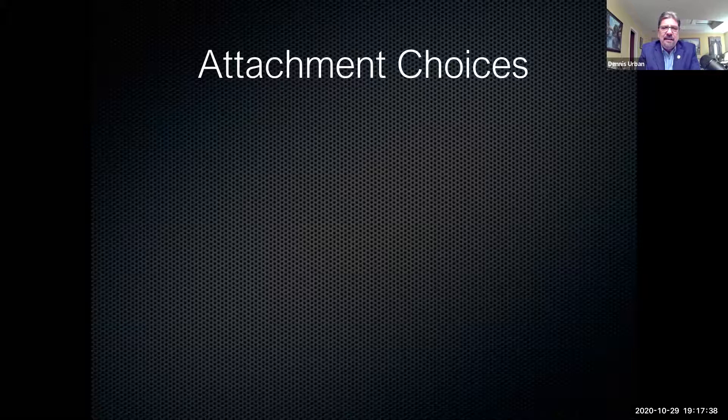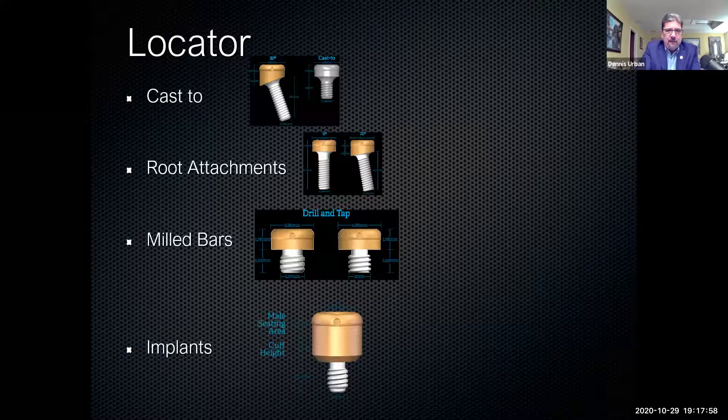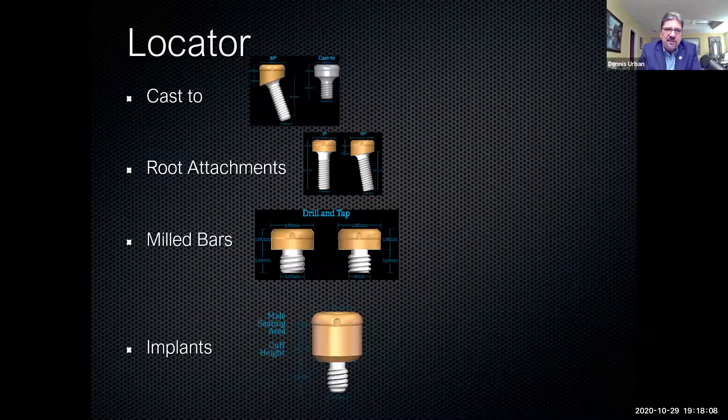Let's talk about attachment choices on implant overdentures. The number one choice out there is the locator. I use locator a lot — it's utilized for cast tube, for root attachments, for mill bars, and for implants directly into the bone. They even have locator attachments for divergency issues when implants are not parallel. ERA attachments are still being used quite a bit as well. On the upper left-hand corner you can see the final impression, where we pour a soft tissue model, then make a verification index because we're making a bar, then go through the protocol of a setup, occlusal rim, and setup, and then mill the bar.